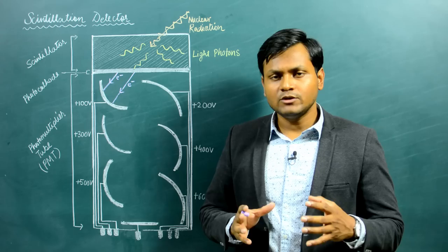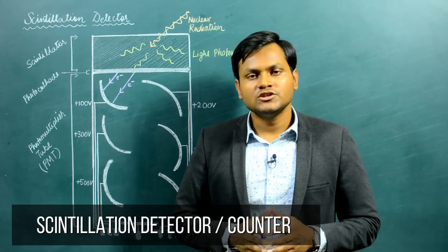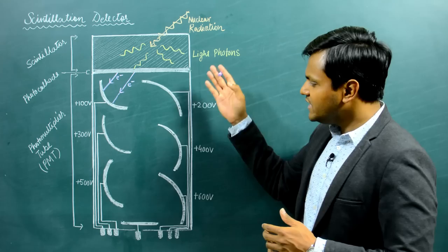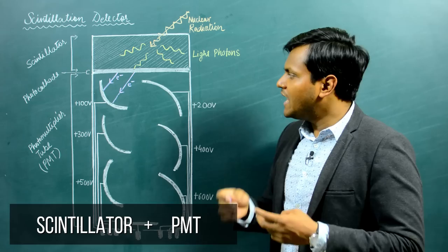The detector we are going to discuss today also works on a similar kind of mechanism. Today's detector is the scintillation detector. I'm going to talk about the construction as well as the principle and working mechanism of a scintillation detector. Here I have drawn a very simple diagram to represent the basics, and as you can see, the scintillation detector mainly consists of two main parts: a scintillator material and a photomultiplier tube.